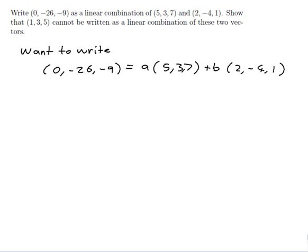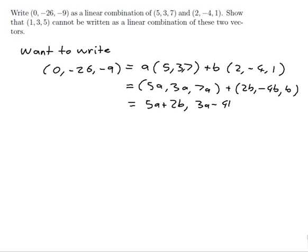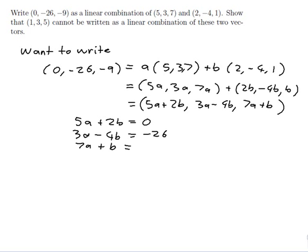Let's see if I can figure that out. This would be equal to 5a, 3a, 7a, and this would be equal to 2b, -4b, b. If I add them together I should get 5a+2b, 3a-4b, 7a+b. Each of those must equal the coordinates of [0,-26,-9], so I get these three equations: 5a+2b=0, 3a-4b=-26, and 7a+b=-9.